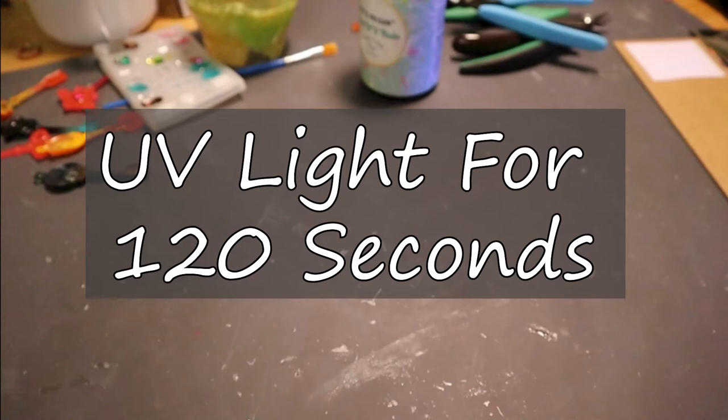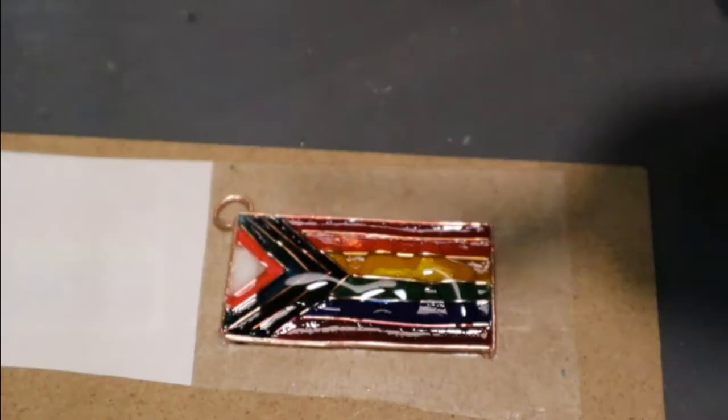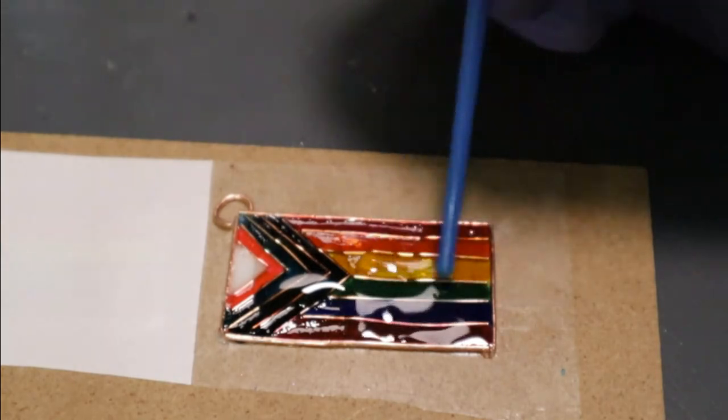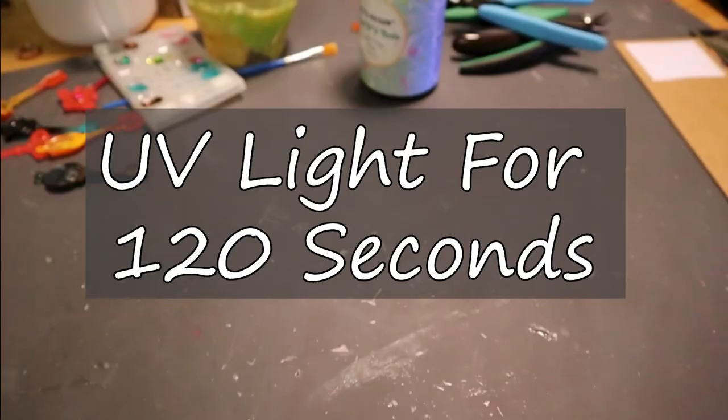Cure for 120 seconds. Flood the top with clear UV resin and use the back of a paintbrush to evenly distribute it. Cure for 120 seconds.